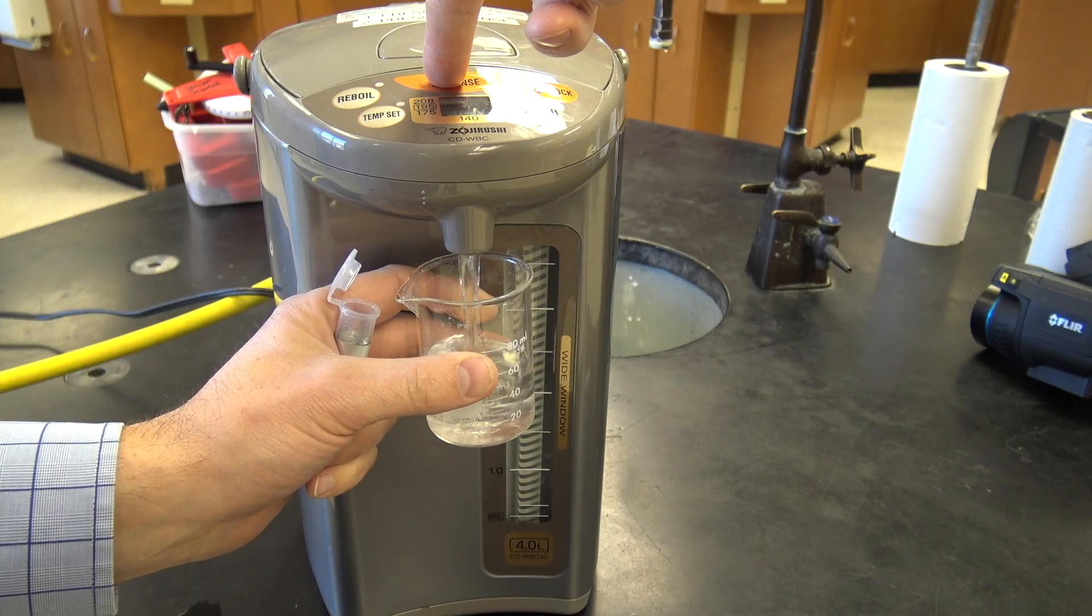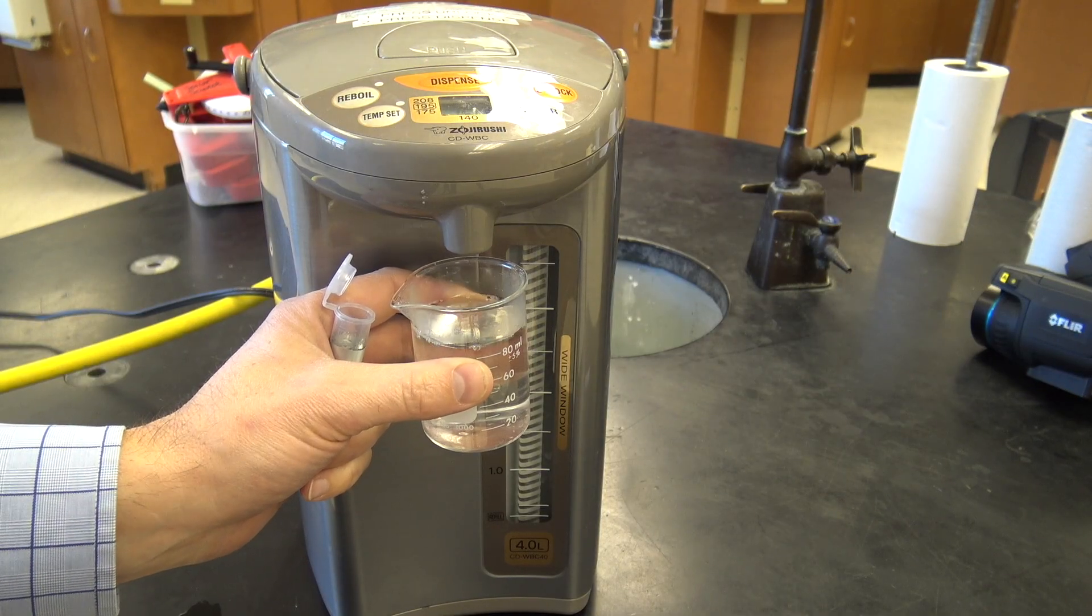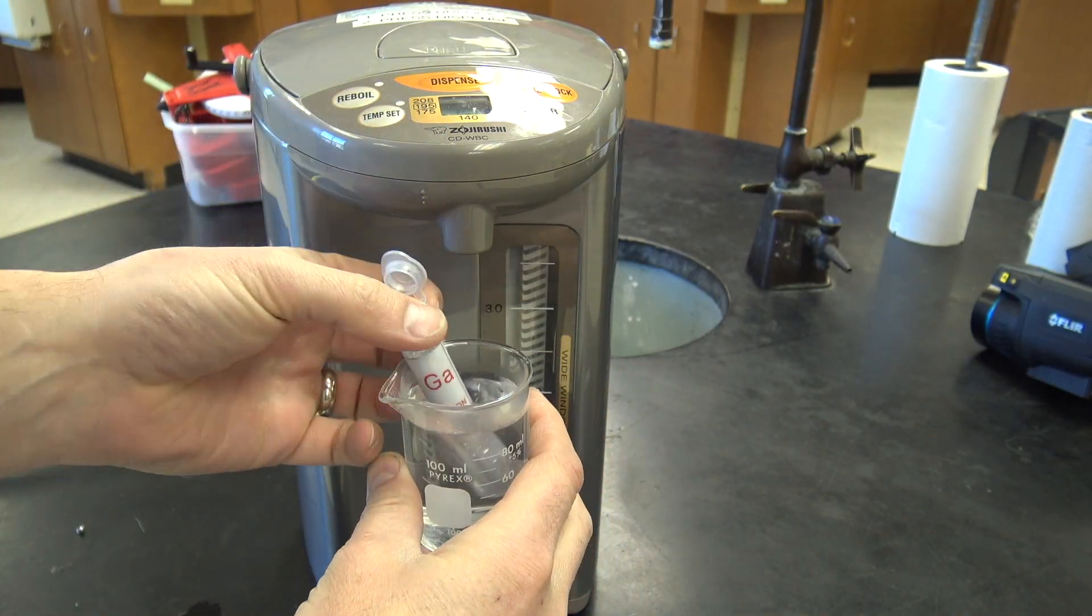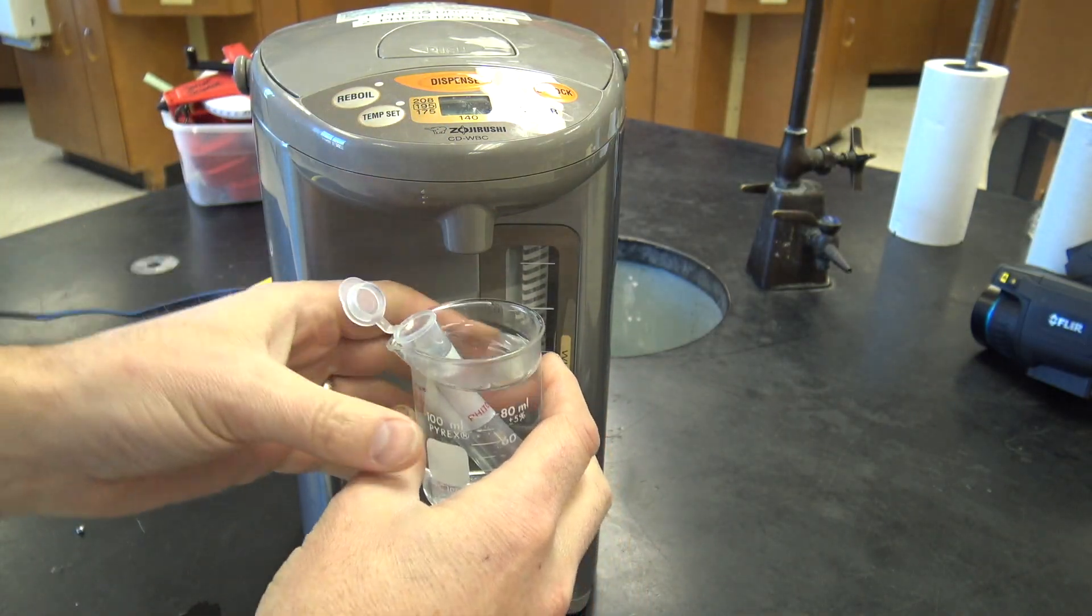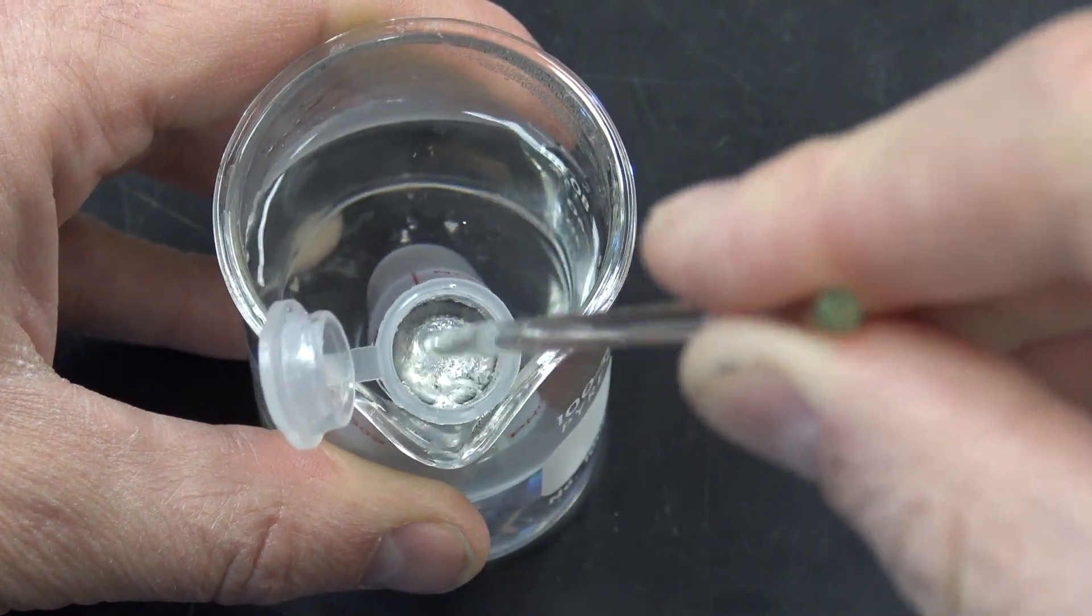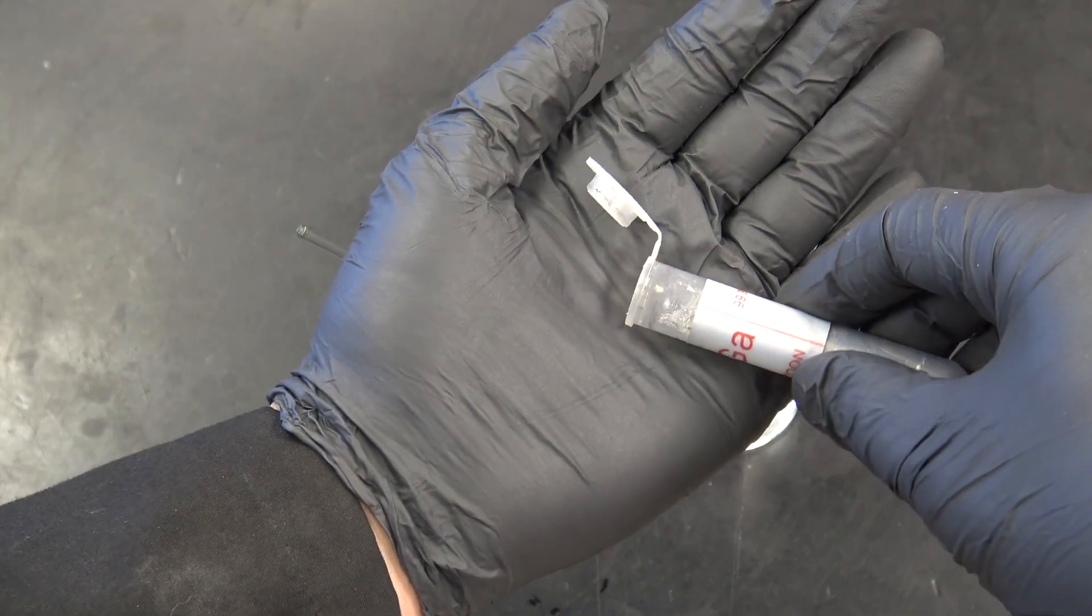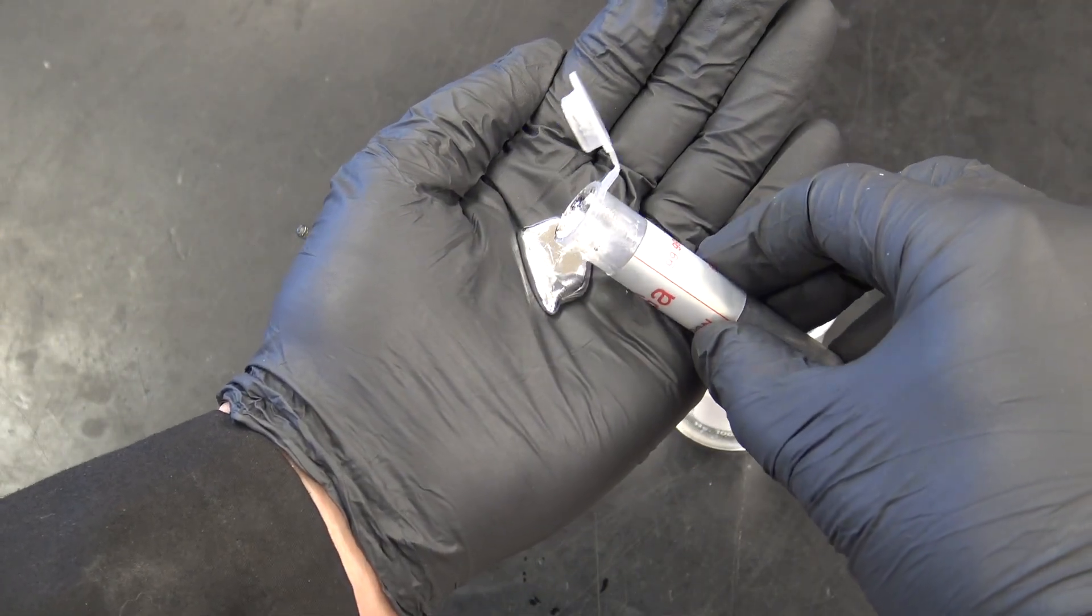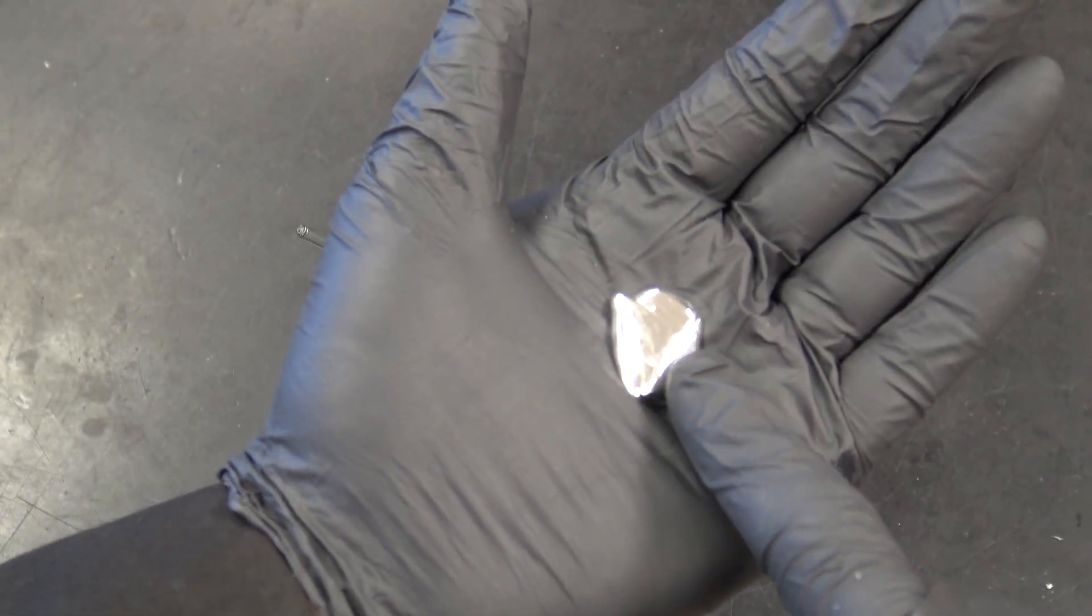The quickest way to get gallium to melt is to get the temperature up real quick. So I'm using water at about 195 degrees Fahrenheit and I'm just going to set the tube of gallium in there. Notice it starts to liquefy very quickly and then you get this liquid metal.